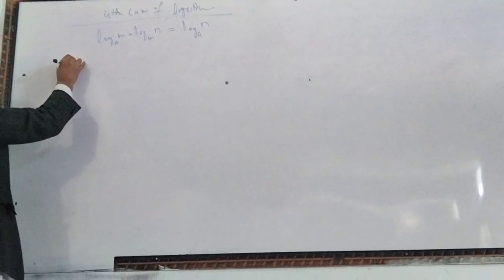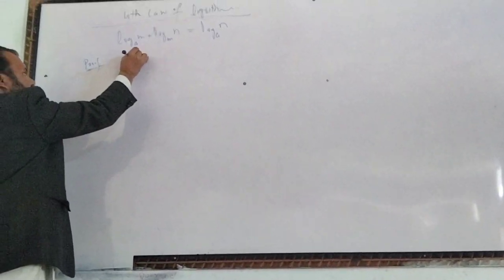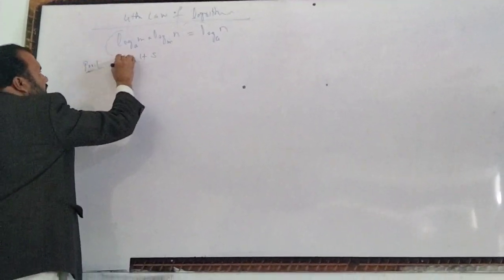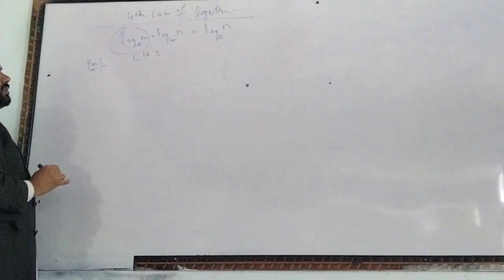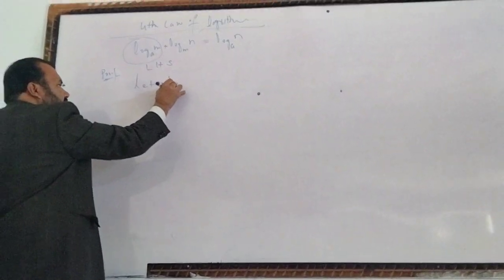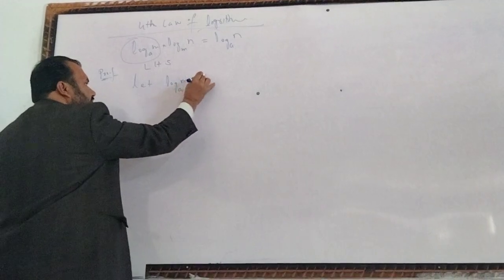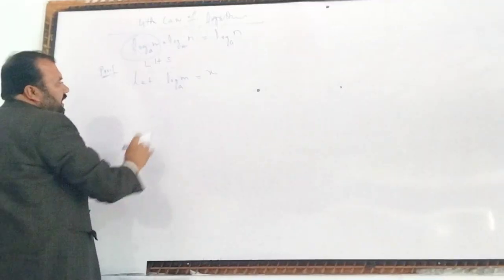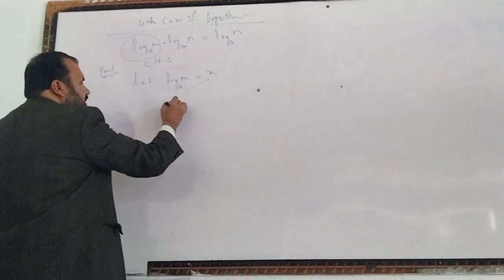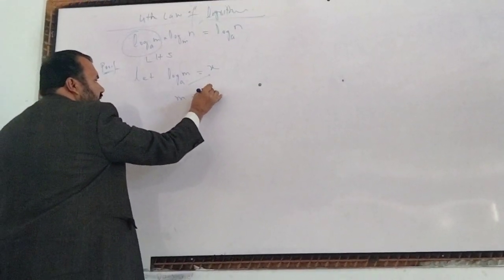We will have a look at the left hand side, log to the base AM and X. This should be log to the base zero, and then X is equal to zero. It means something which equals zero.